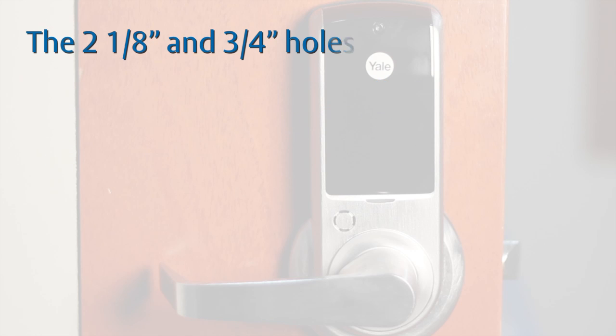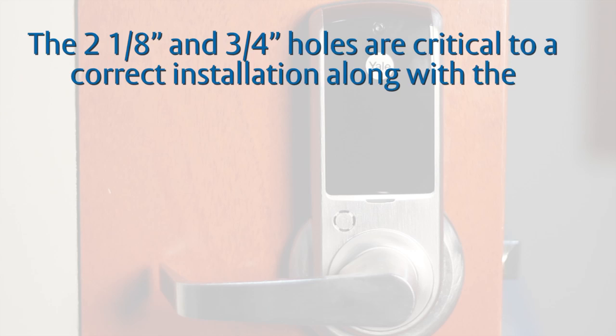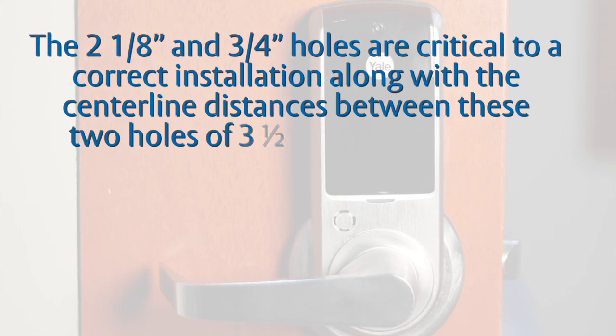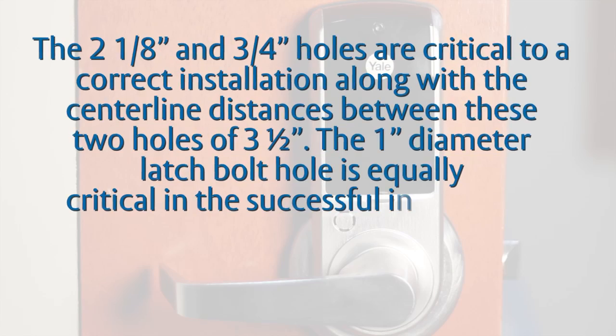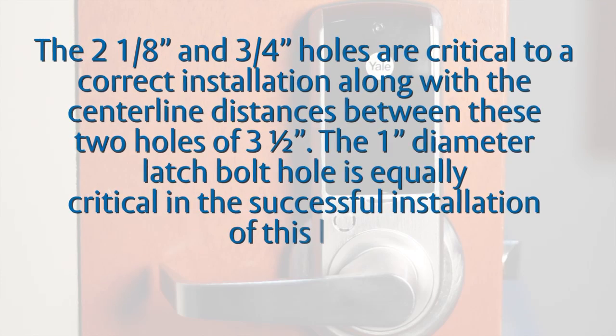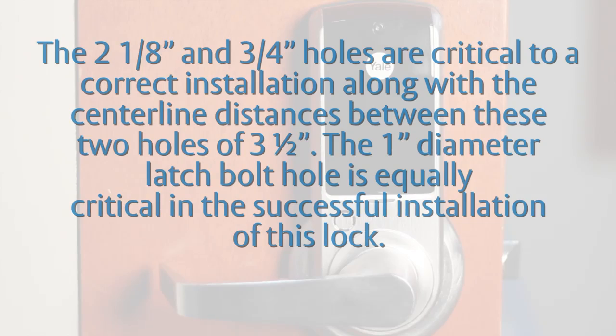The 2 1⁄8-inch and 3 1⁄4-inch holes are critical to a correct installation along with the centerline distances between these two holes of 3 1⁄2 inches. The 1-inch diameter latch bolt hole is equally critical in the successful installation of this lock.